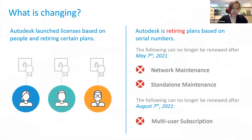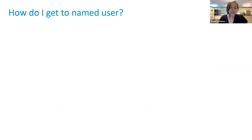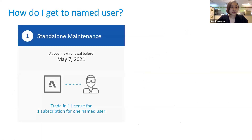In Part Two, we're going to talk about what is changing in the near future. Autodesk has already launched the transition to Named User from serial number, and they are retiring certain plans to make things more user-friendly. From May 7, 2021, there will no longer be network maintenance or standalone maintenance plans — they will all change to subscription. Also from 2021, there will no longer be multi-user subscriptions — all subscriptions will be for single named users only.